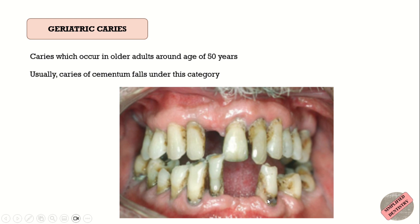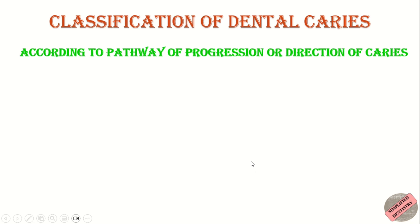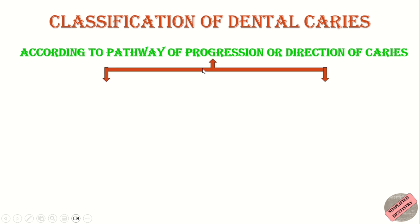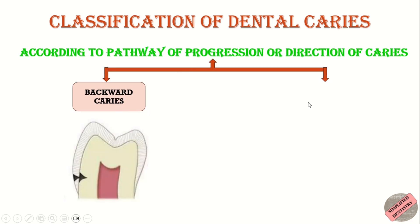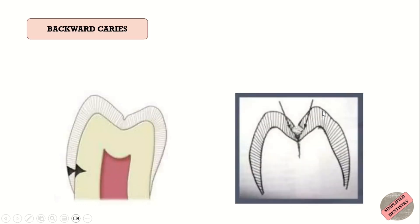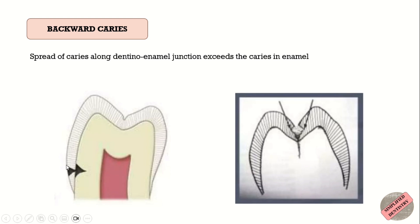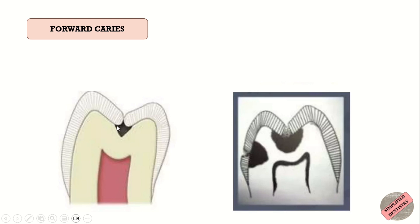The next classification is according to the pathway of progression or the direction of caries. According to this classification, caries can be either backward caries or forward caries. When the spread of caries along the dentino-enamel junction exceeds the caries in the contiguous enamel, caries extend into the enamel from the junction and is termed backward caries, since the spread is in the backward direction. Forward caries is present whenever the caries in enamel is larger than or at least the same size as that in the dentine, and it spreads in the forward direction from enamel to dentine.